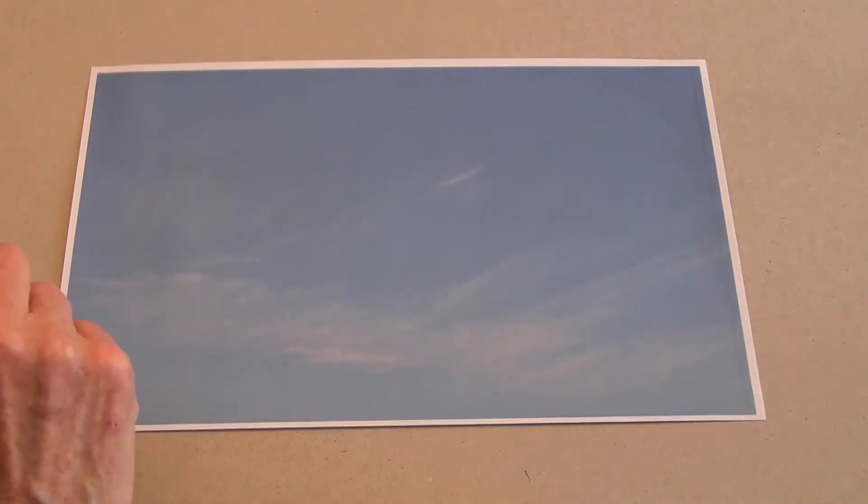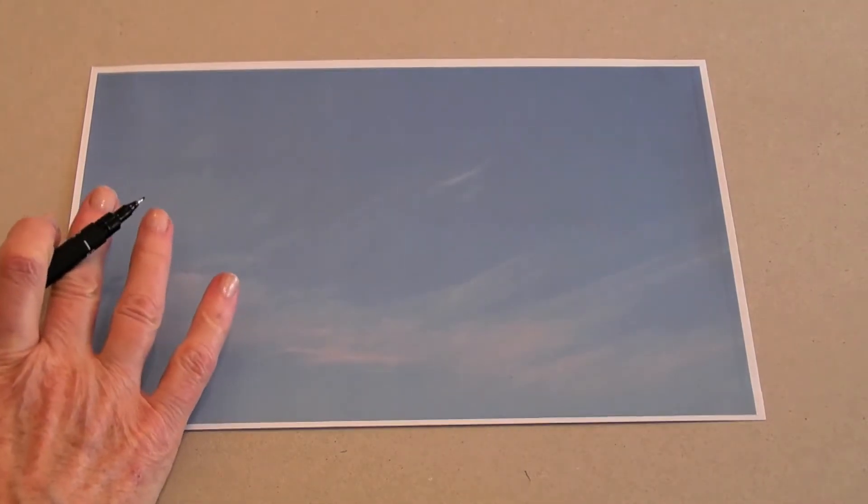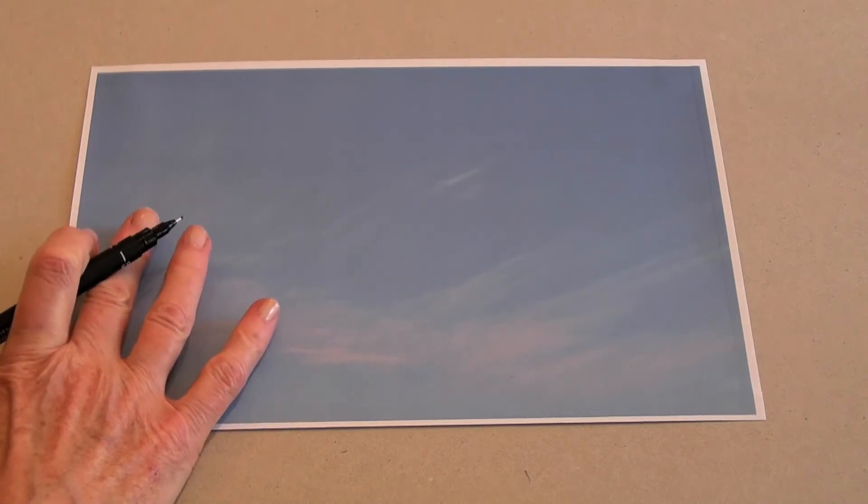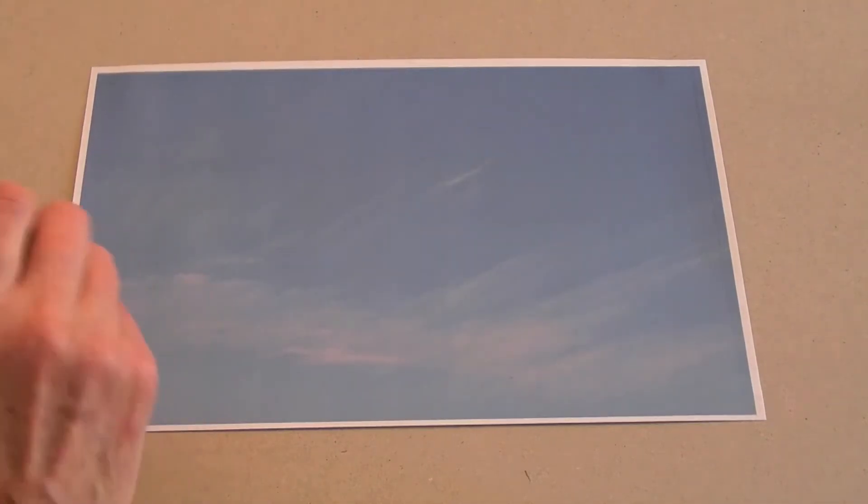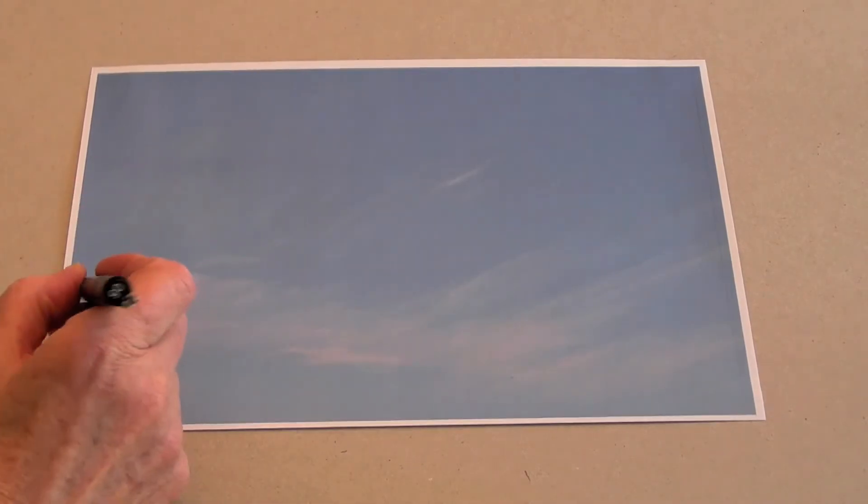We'll start by using a printout from a photograph. Now ideally you would start using tracing paper but it's going to obscure the image here because this is quite light, so we're just going to draw directly onto the image itself.